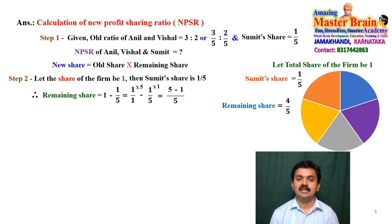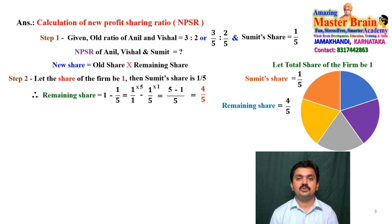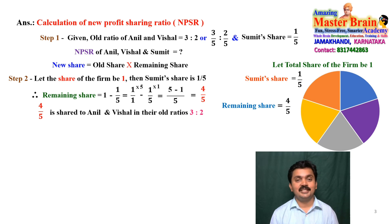5 minus 1 gives us 4, so the remaining share is 4/5. This remaining share is now to be distributed to the old partners in their old ratio of 3:2. Now we know the old ratio and the remaining share — let us apply the formula.